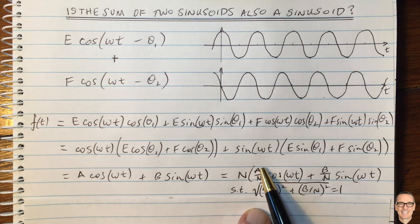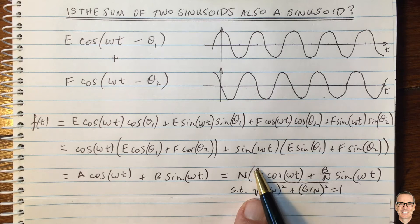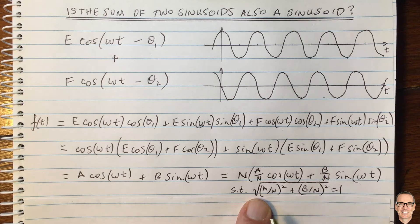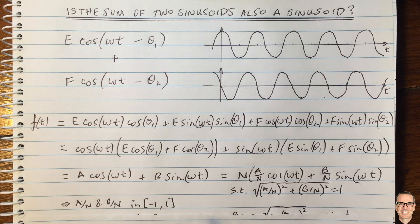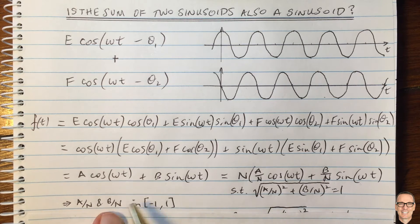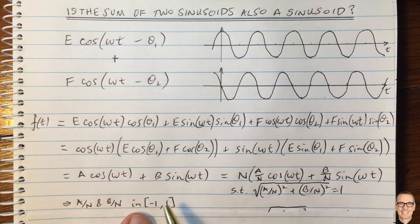Having done that, we know that A divided by N and B divided by N, we know that they are both between minus 1 and 1 because of this expression here. Now, because this is a plus here and these are squares, there's no negatives in this addition because they're both squared. So therefore, A on N and B on N are both going to be between minus 1 and 1.